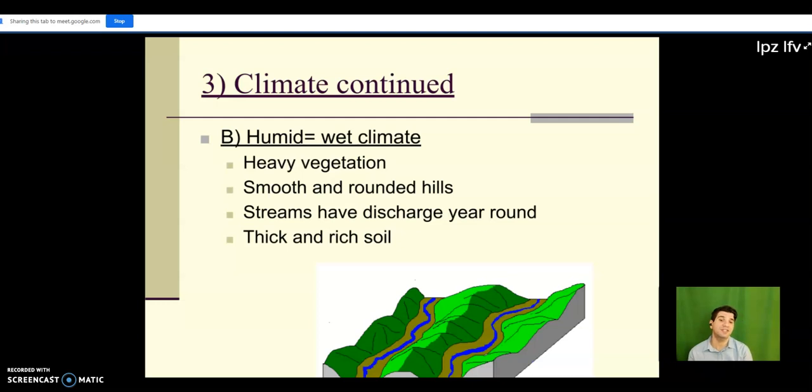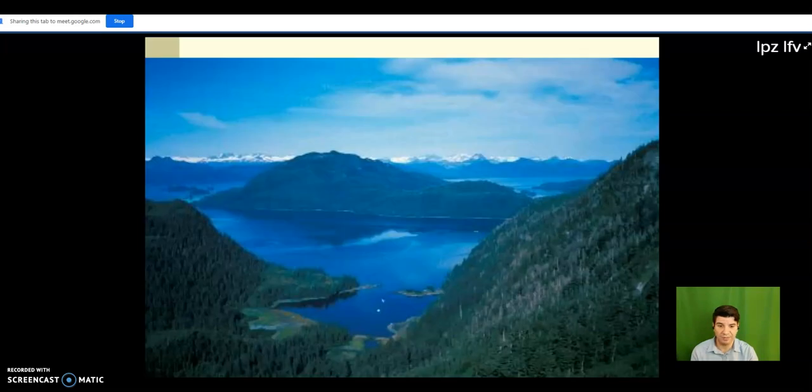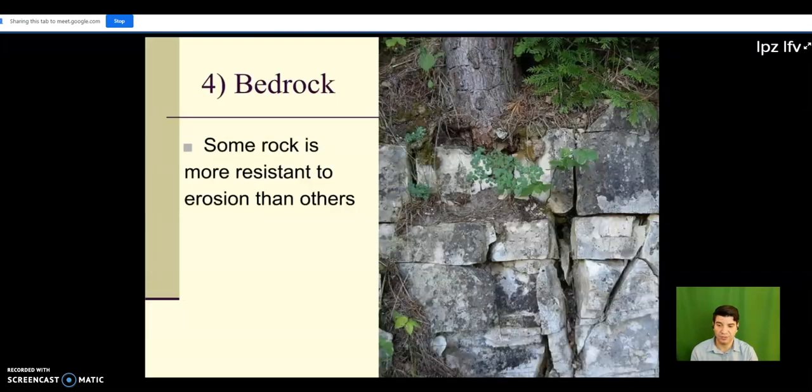Now humid environments, it's basically the opposite. Heavy vegetation, smooth rounded hills, streams have discharge all year long, meaning there's always water flowing through those streams, no transitory streams or less. Now this is kind of interesting here, we're looking at a mountainside in Alaska. Alaska is one of the wettest states we have in the United States, rains there more often than it doesn't. And what you're seeing is vegetation growing on the side of essentially new rock. So a lot of the land there is relatively young but we can still find vegetation.